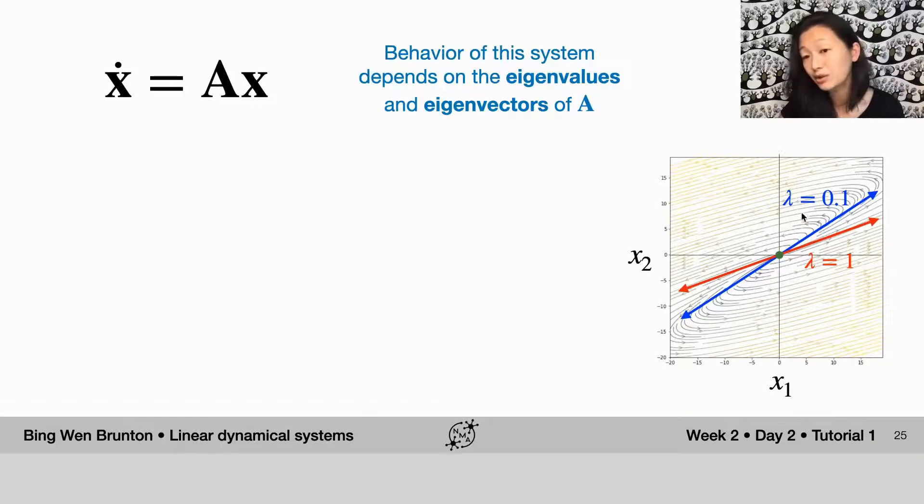So this blue eigenvalue here is 0.1, as we told us above 0, which means it's growing. And this red eigenvalue here is 1, which means it is also growing, but it's growing faster. And you can see that in their respective orientations, initially, the flow, if you're really close to this blue eigenvector, you follow the blue eigenvector. But after a really long time, all the trajectories start following the direction of the red eigenvector.